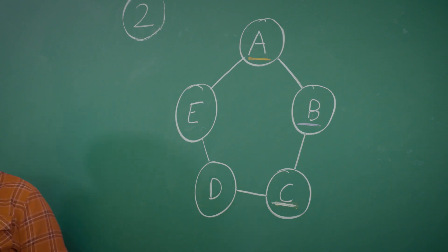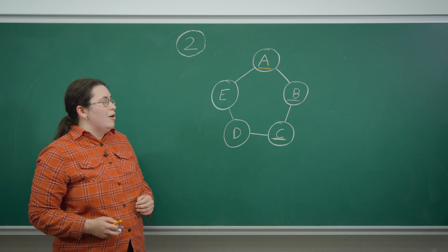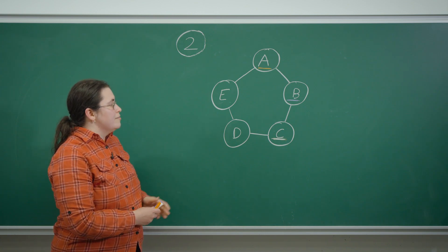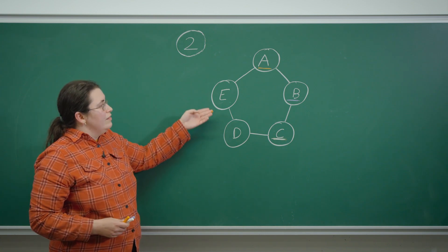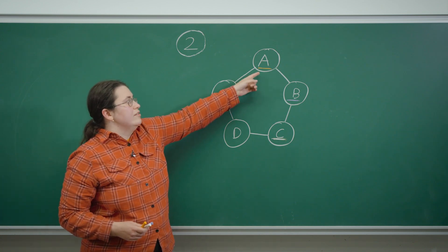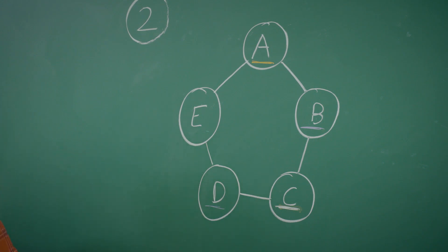If D is purple, then E has to be white because it's adjacent to both an orange and a purple circle. So in this world there is only one way of finishing the coloring.